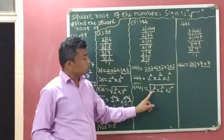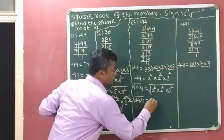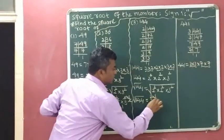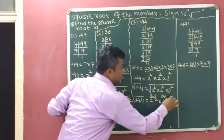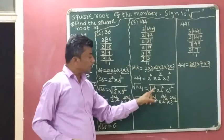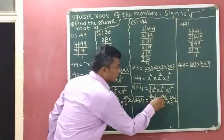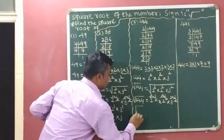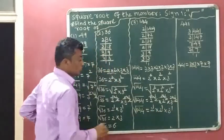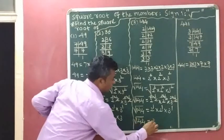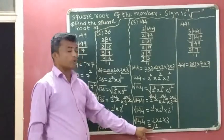Square root means half, so we multiply 1 half with each exponent 2. The 2s cancel everywhere, giving 2 to the power of 1 times 2 to the power of 1 times 3 to the power of 1. So the square root of 144 equals 2 × 2 × 3. That is 3 twos are 6, and 2 times 6 is 12. So the square root of 144 is 12, matching both methods.